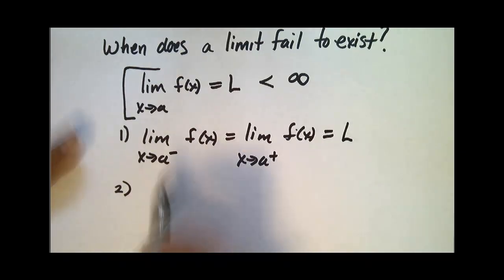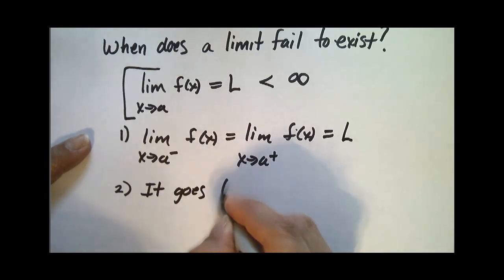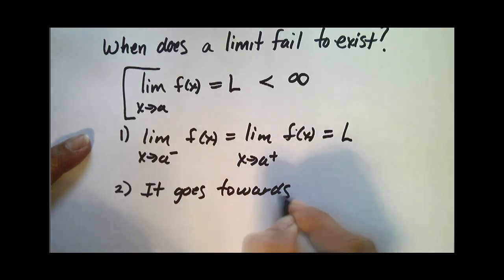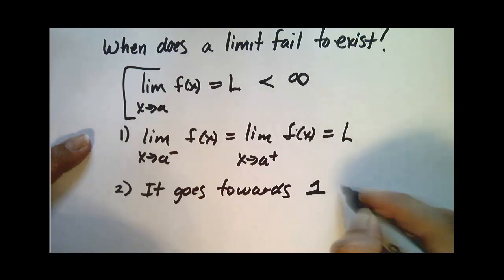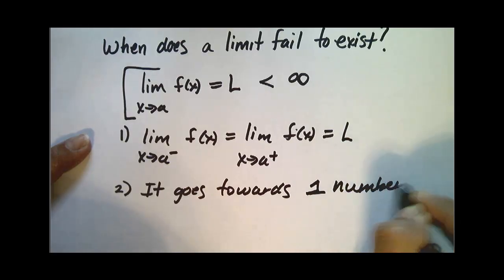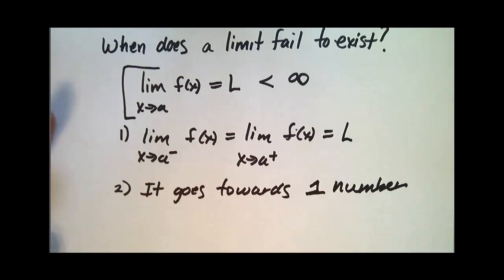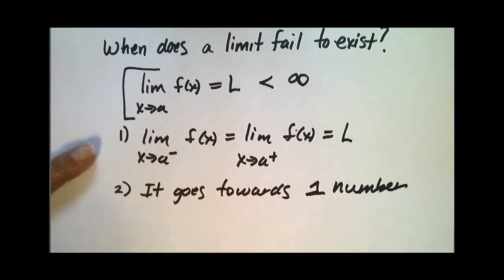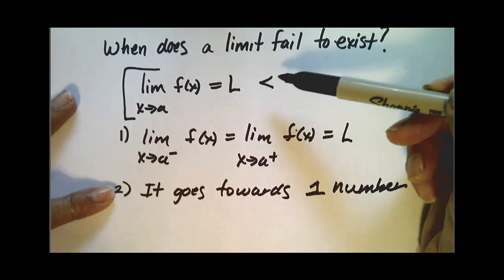Another thing that it says is that it goes towards one number. So we'll look at cases perhaps where a function can't decide which number to go to, which would mean it would violate this statement.